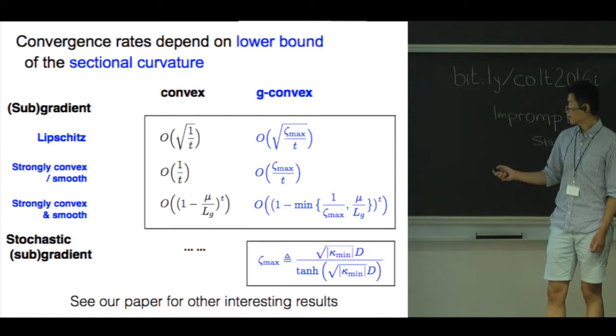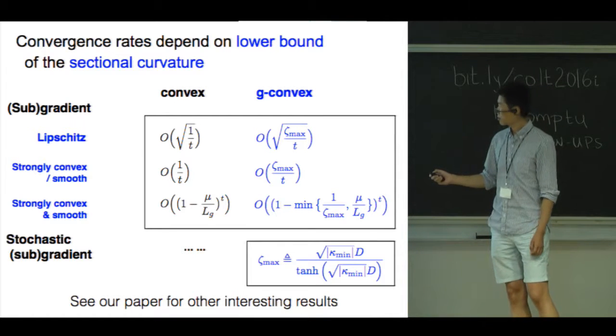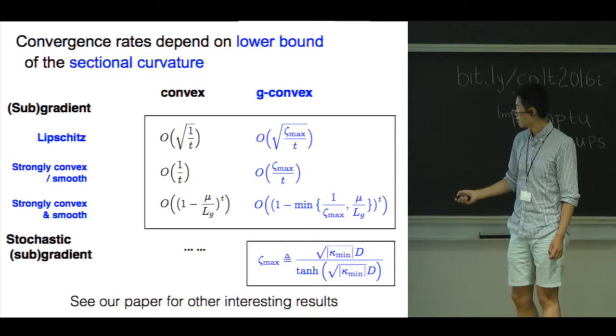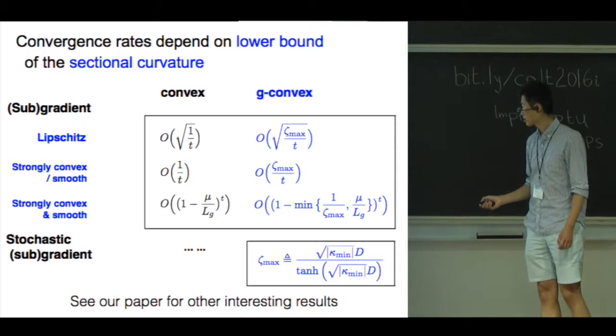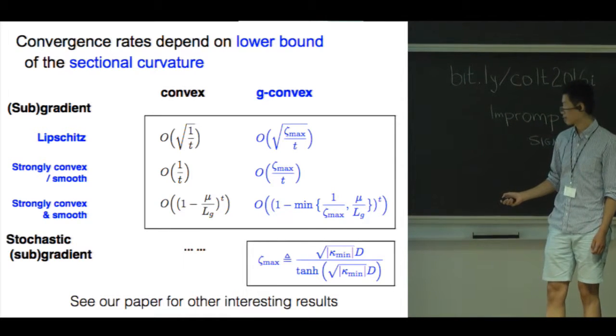First note that the convergence rates for different spaces have the same dependency on the number of iterations t. Second, note that the convergence rates also depend on zeta max, which in turn depends on the sectional curvature lower bound and the diameter of the geodesically convex set.